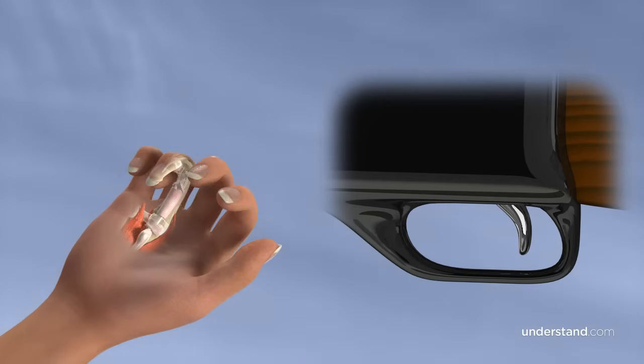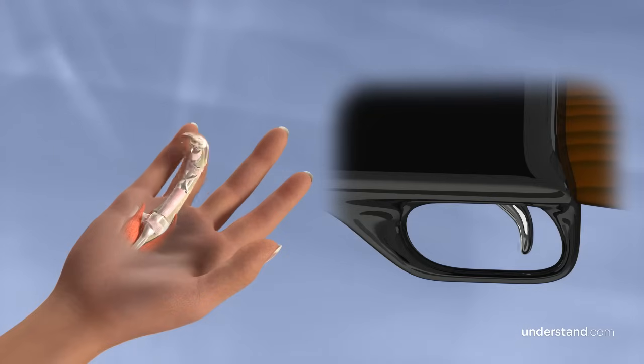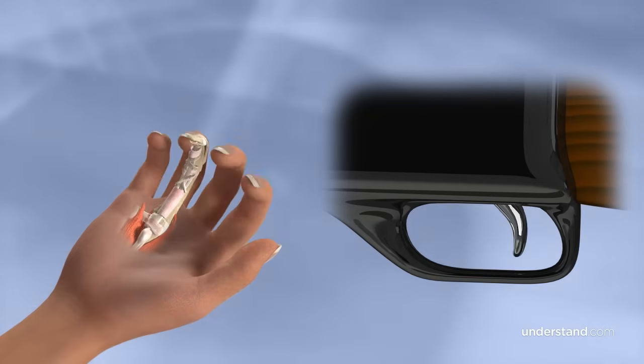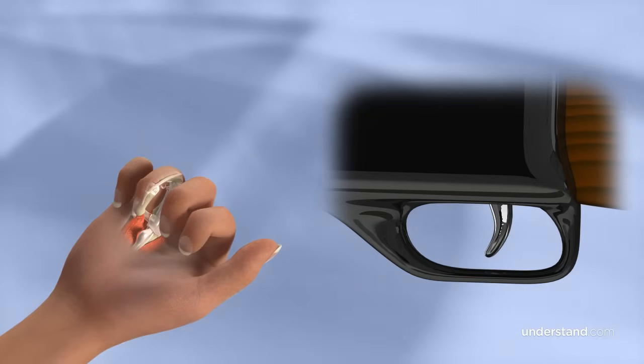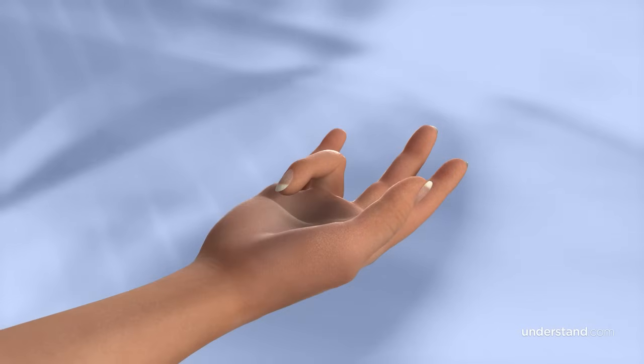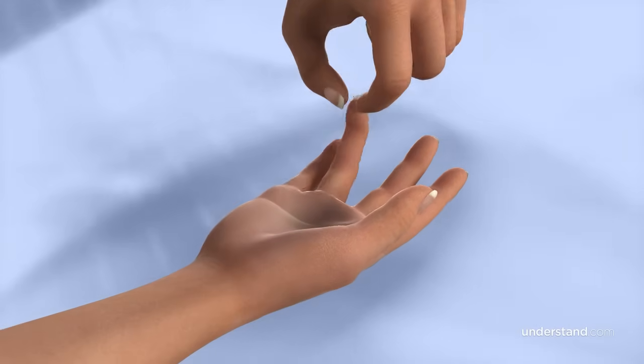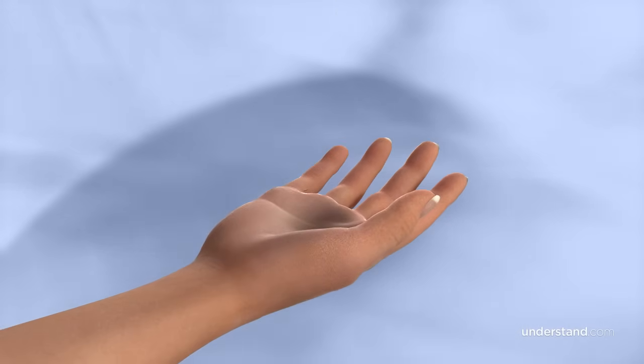In severe cases, the finger may lock in a bent position and remain stuck in the palm despite attempts at straightening the finger. In some people, the finger becomes stuck firmly and requires using the opposite hand to straighten it.